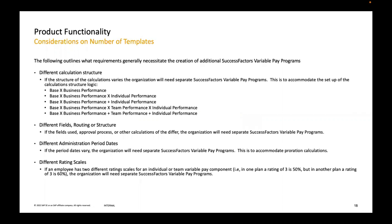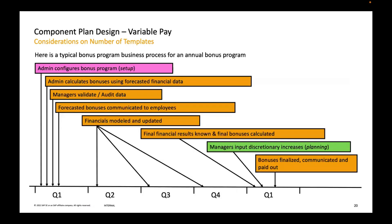These are the same things we just talked about. Now, compensation design: in any organization running the plan annually, this is a very standard process. We configure the bonus plan at the start of the financial year. The admin calculates the bonus using forecast financial data — for example at Wipro, every employee used to receive a forecast of what the organization is targeting to achieve in the next quarter, since their bonus was paid quarterly.